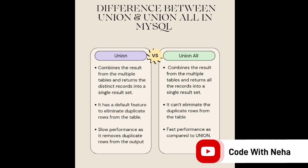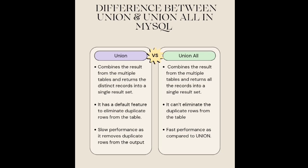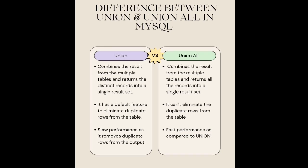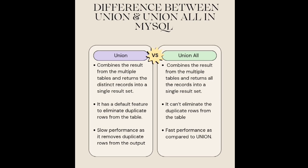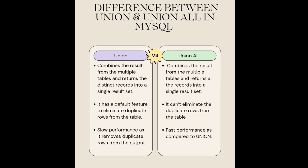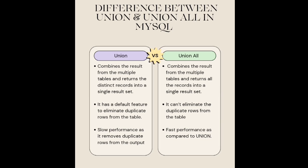Difference between Union and Union All: Union combines results from multiple tables and returns the distinct records into a single result set. Whereas Union All combines the results from multiple tables and returns all the records into a single result set.